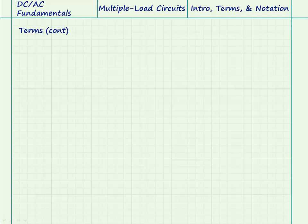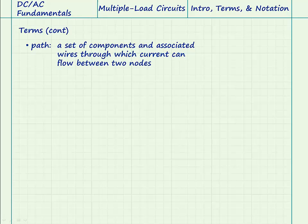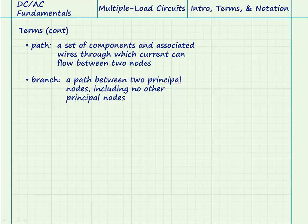Here are two more definitions which are important. A path is a set of components and associated wires through which current can flow between two nodes. A branch is a path between two principal nodes that does not include any other principal nodes. An important characteristic of a branch is that all points in the branch carry the same current.